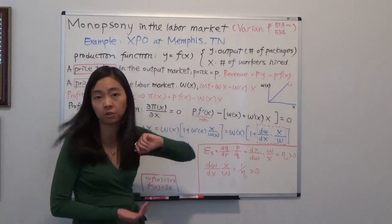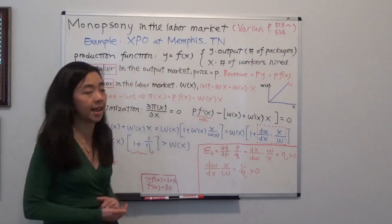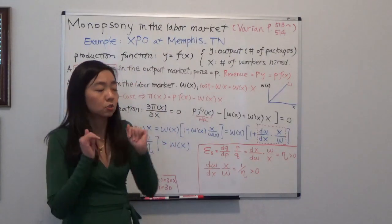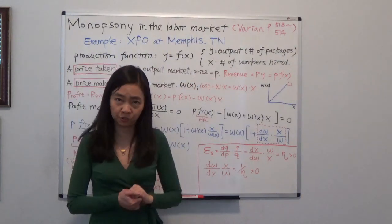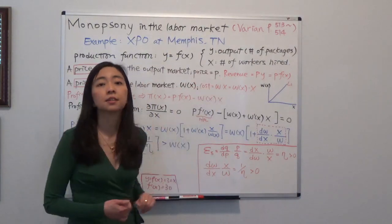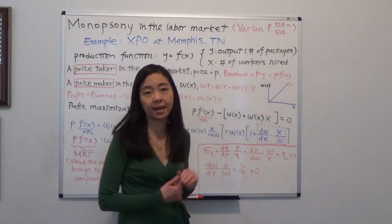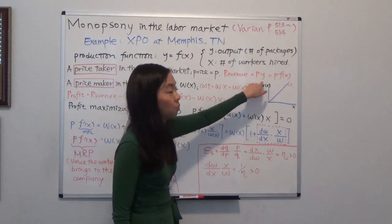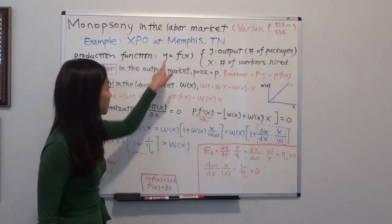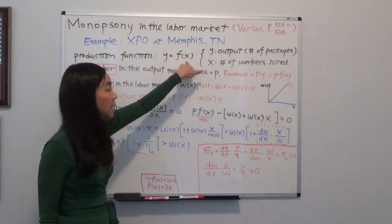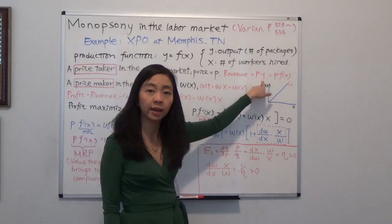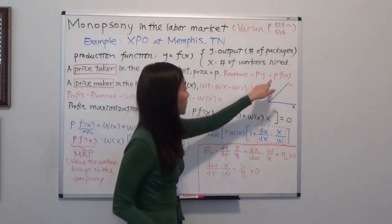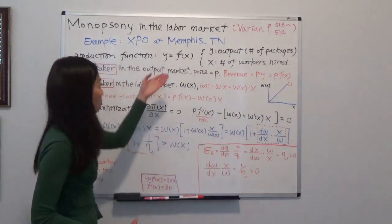So your revenue will be equal to price of the packaging service you charge, which is given, times the number of package service you provide. So P times Y. And remember, Y is a function of X. X is the number of workers you hire. So your revenue will be P times Y, which is also equal to P times F(X). So that will be your revenue.